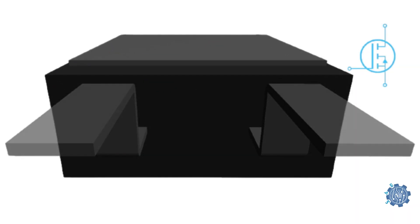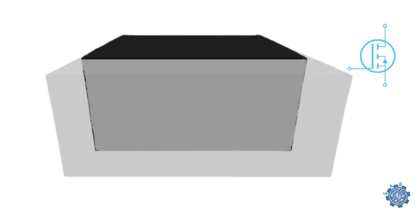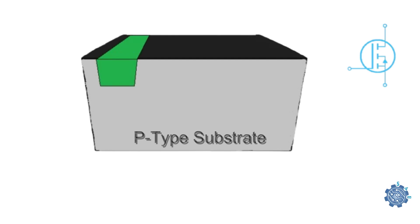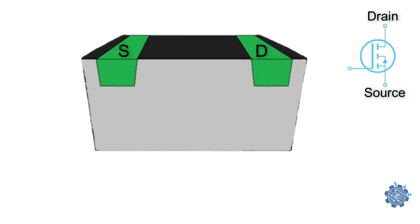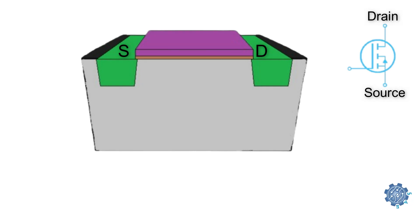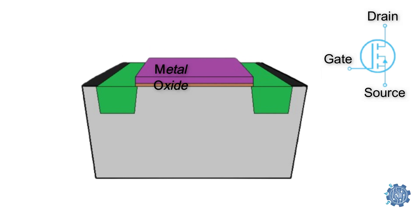Seeing the cross-section of a MOSFET will help us understand how they are built and how they work. For this example, we will use an NMOSFET, which has a positive doped substrate in which there are two heavily negative doped regions. These are called source and drain. On top of the substrate, an oxide which acts as an insulator is placed, then on top of that a metal layer is placed, and this is creating the gate structure. You can now see where the Metal Oxide Semiconductor comes from in a MOSFET.